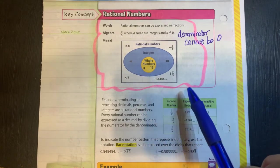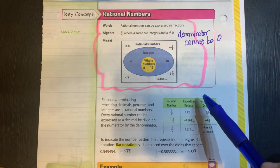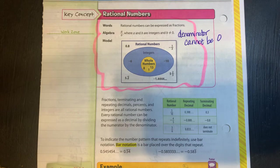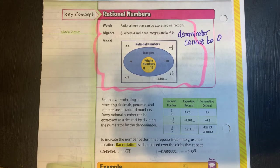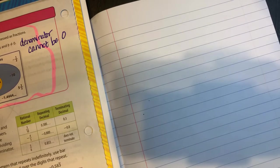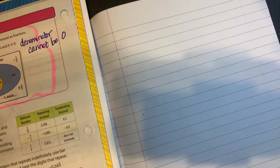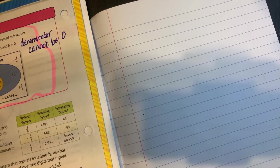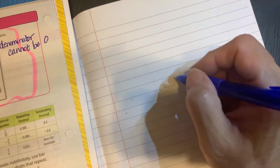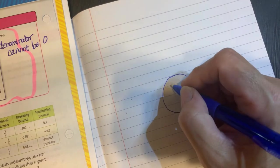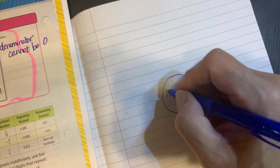Looking at this model, they start in the middle with the whole numbers. So what I want you to do is we're going to kind of switch for a second and go to our journals. We're going to put some definitions.